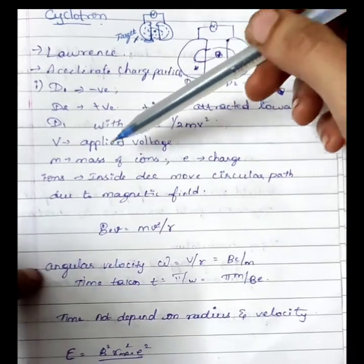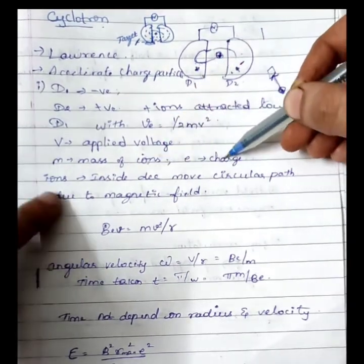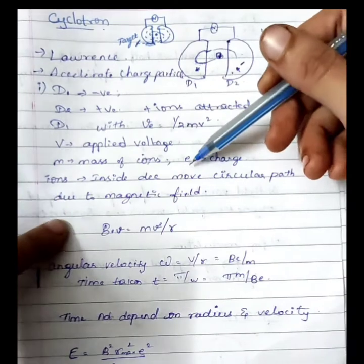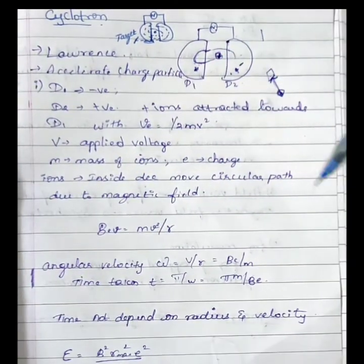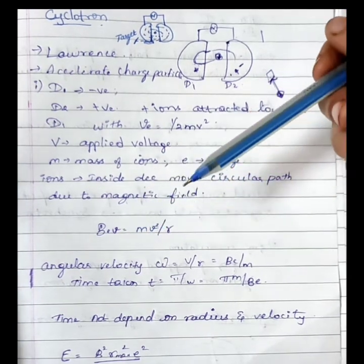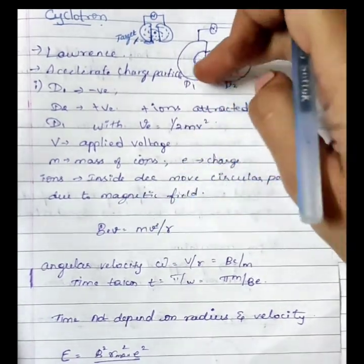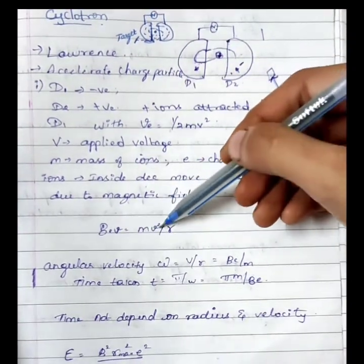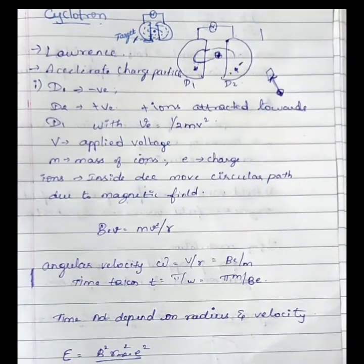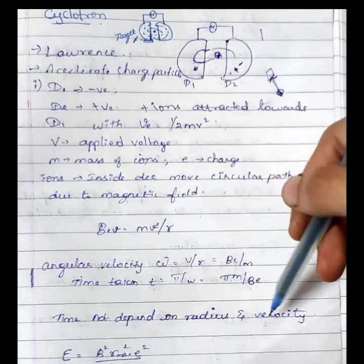There is a mass of ions and a charge. Inside D1 and D2 the ions move in circular paths due to the magnetic field. The charged particles experience magnetic Lorentz force, and the Lorentz force equals the centripetal force: BеV = mv²/r. This is the most important equation in the cyclotron.